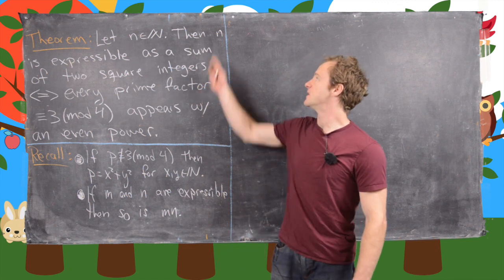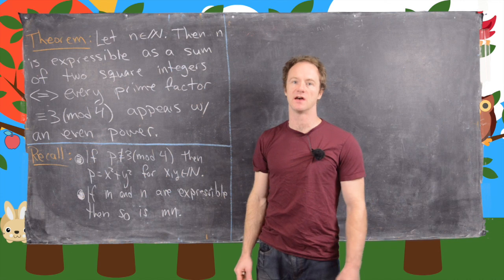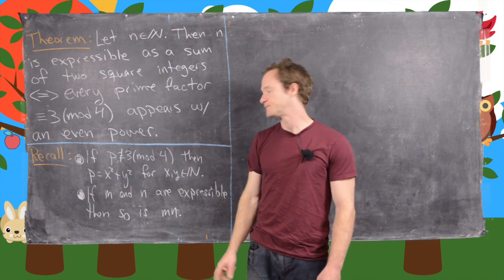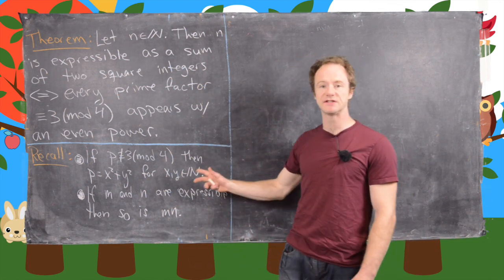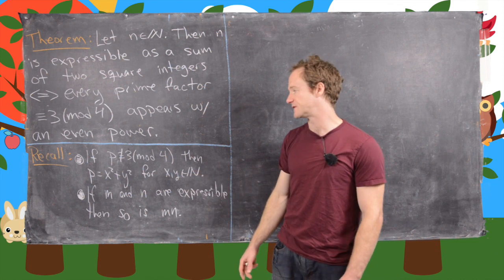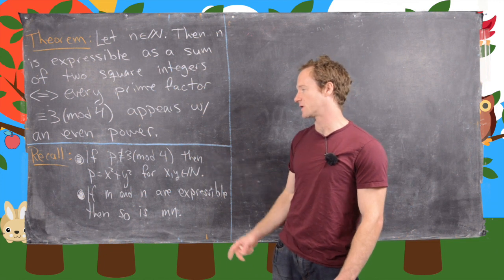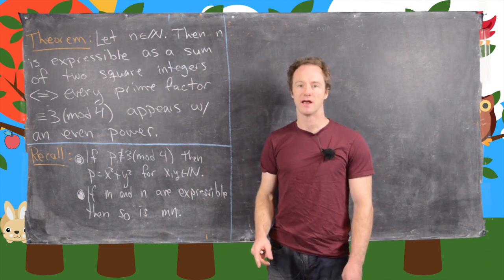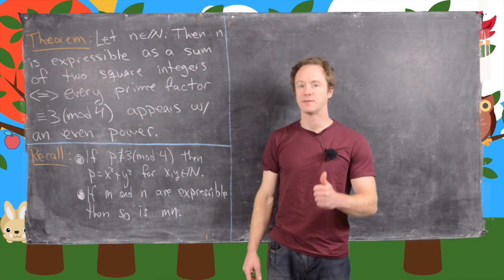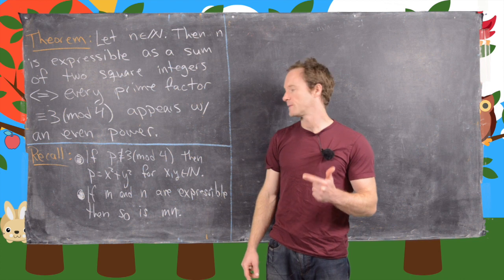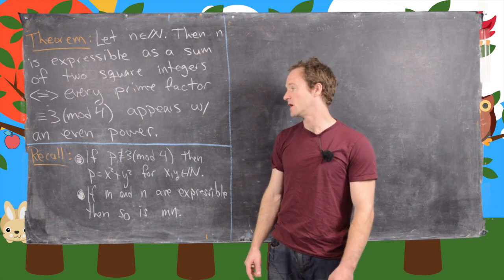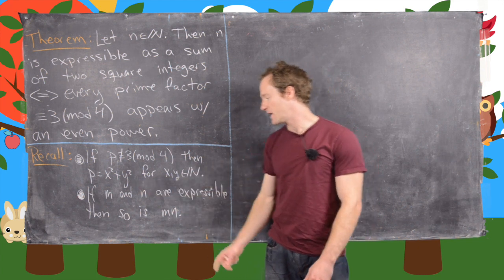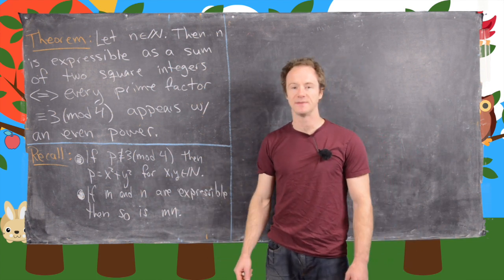So if we've got a natural number n, then n is expressible as a sum of two squares if and only if every prime factor that is congruent to 3 mod 4 appears with an even power. Along the way as we prove this, we're going to need these two facts from the earlier parts of this video. So if p is not congruent to 3 mod 4, then p can be written in the form x squared plus y squared for x, y integers — meaning if p is 2 or congruent to 1 mod 4, it can be expressed as a sum of two squares. And we also have the multiplicative property: if m and n are expressible as the sum of two squares, then m times n is as well.